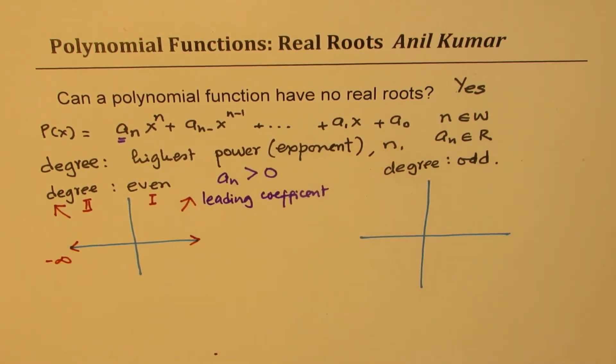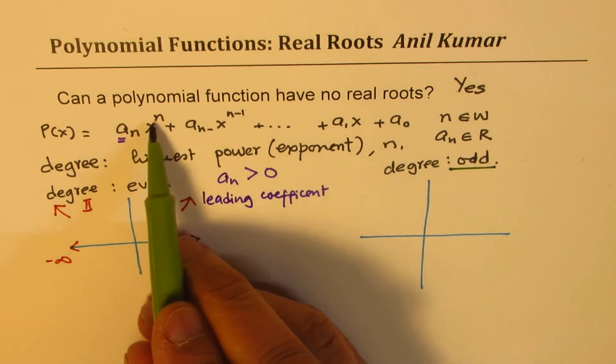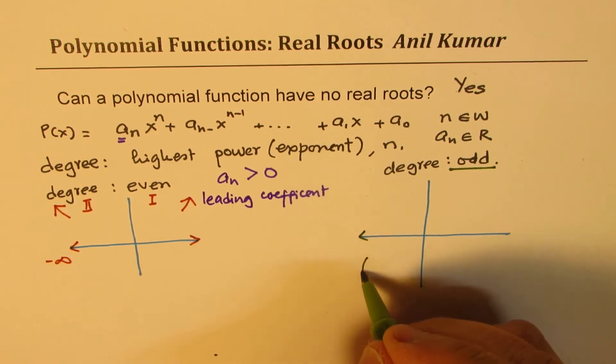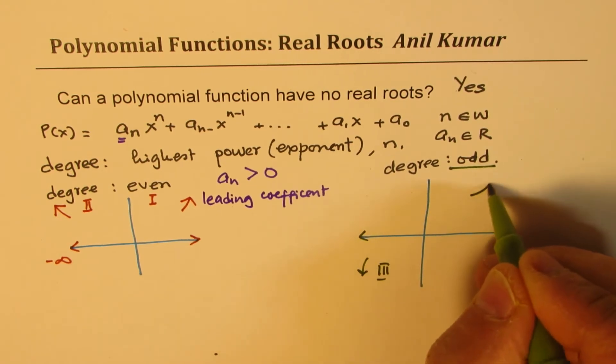However, if we have odd degree polynomial, if x is approaching negative infinity, the graph will approach negative infinity. So it moves from quadrant three to quadrant one.